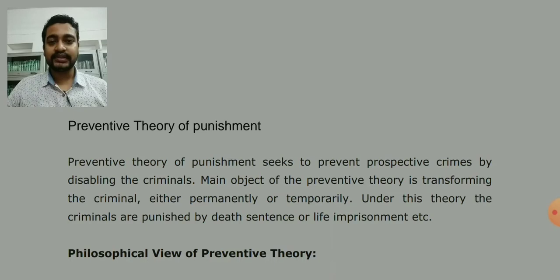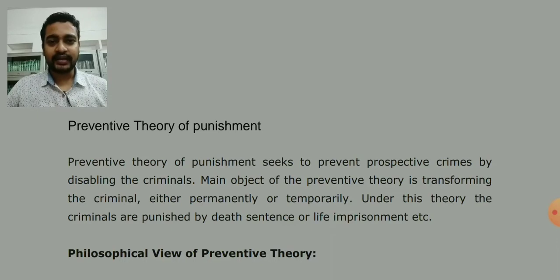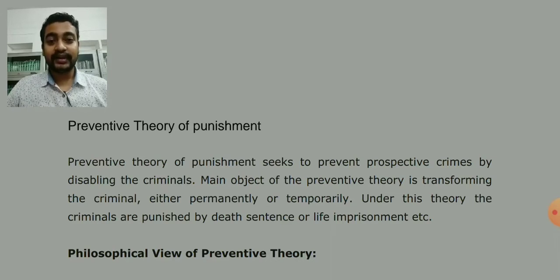Let's talk about death sentences or life imprisonment. Temporarily, we prevent the criminal — for example, 10 years in prison — so that during that time there will be no crime.